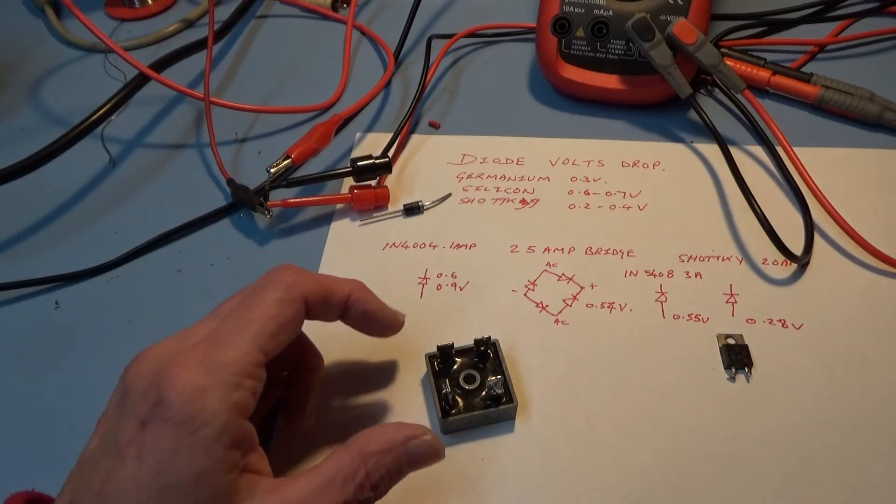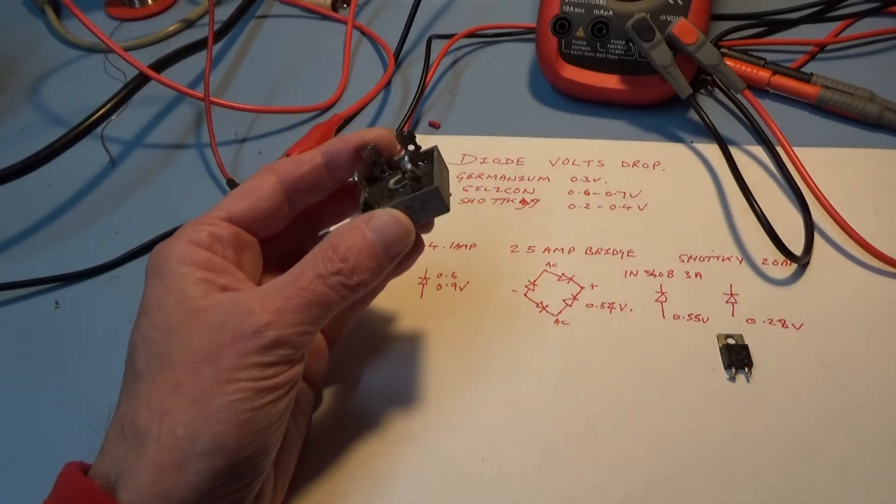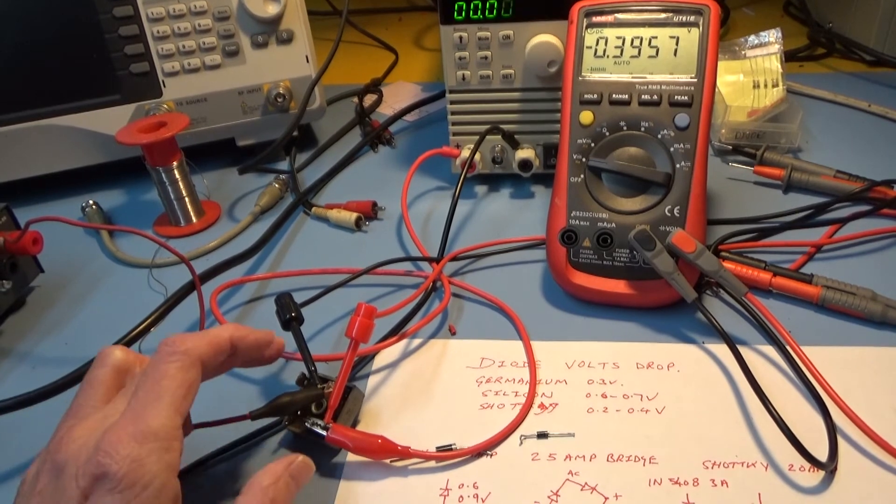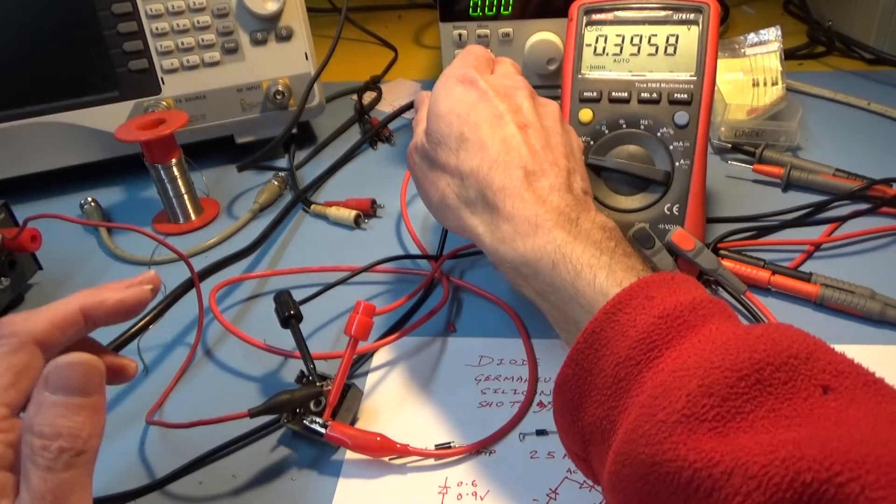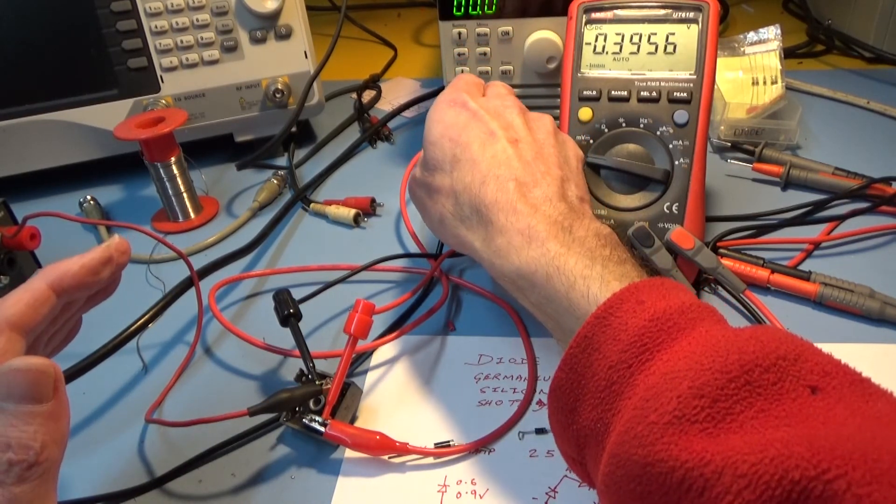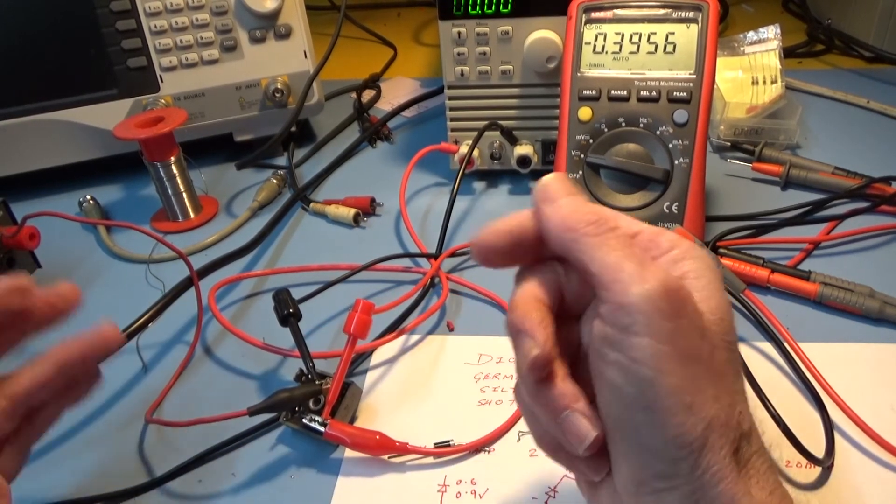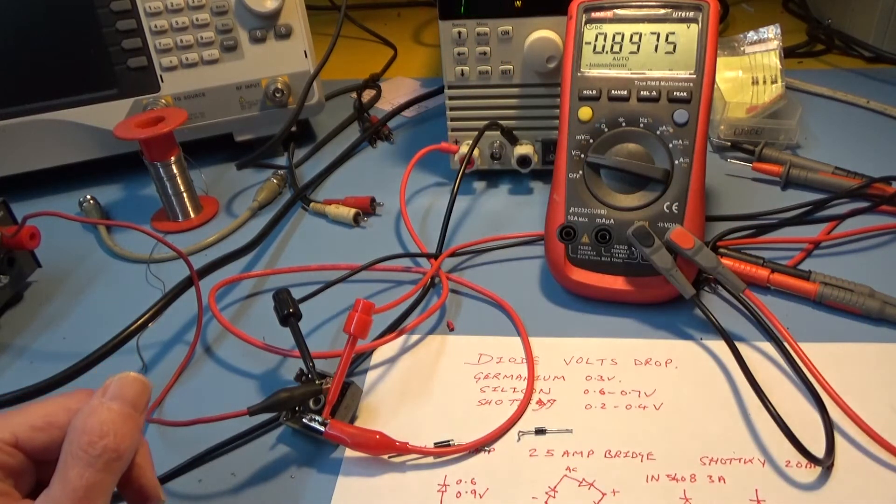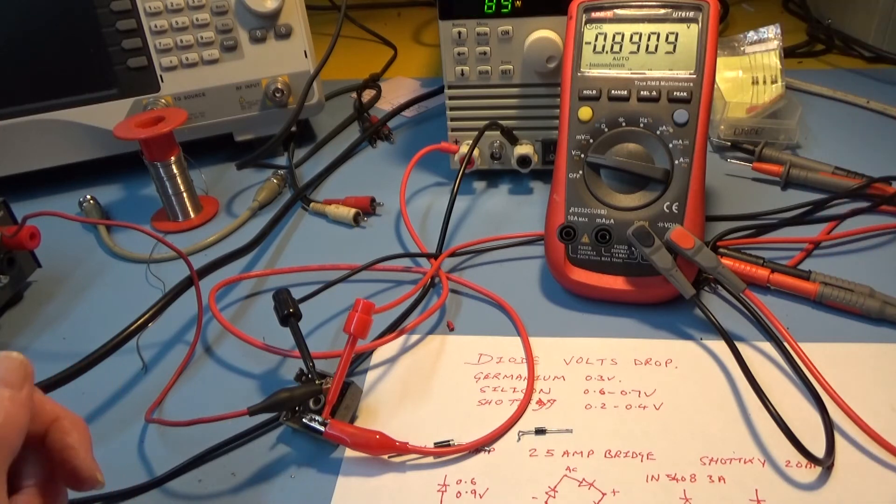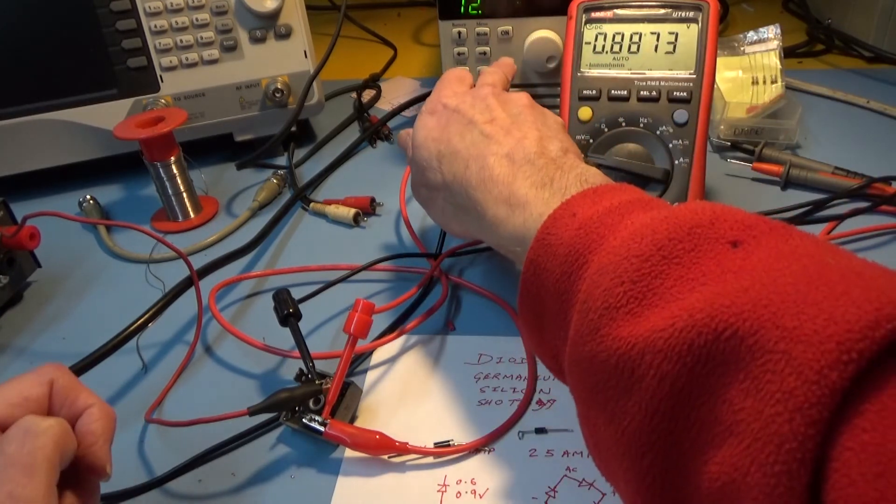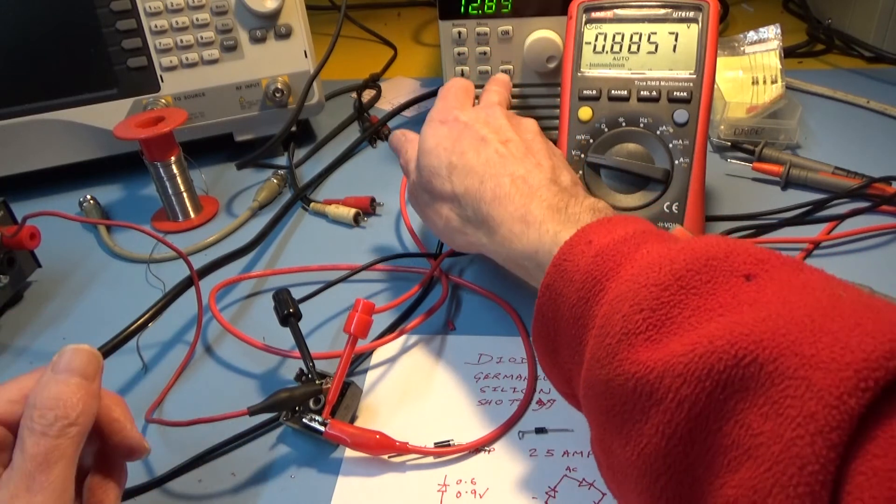Next one we're going to test is the 25 amp bridge rectifier. Bridge rectifier's installed. Like the previous diode I'm only going to start off at 1 amp. I'm not testing all the diodes in there, there's four obviously but they'll all be fairly similar. So 1 amp, 0.9 volts drop.